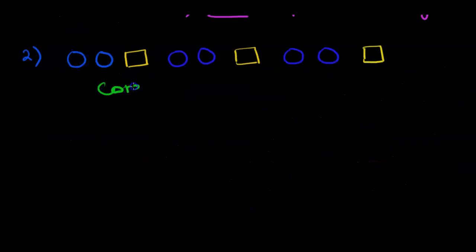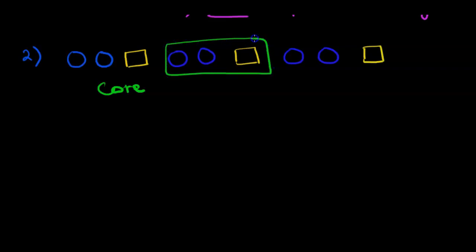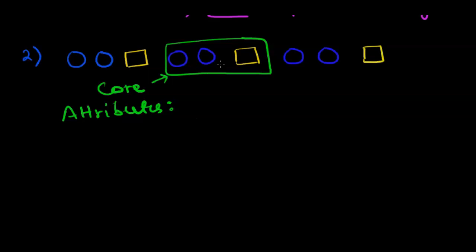Let's take another example. If we're asked to find the core of the pattern, we see two circles, one square, two circles, one square, two circles, one square being repeated. So we say two circles and one square is the core of this pattern. Now, to find the attributes that are changing, we look at the core: we have two blue circles and one yellow square.